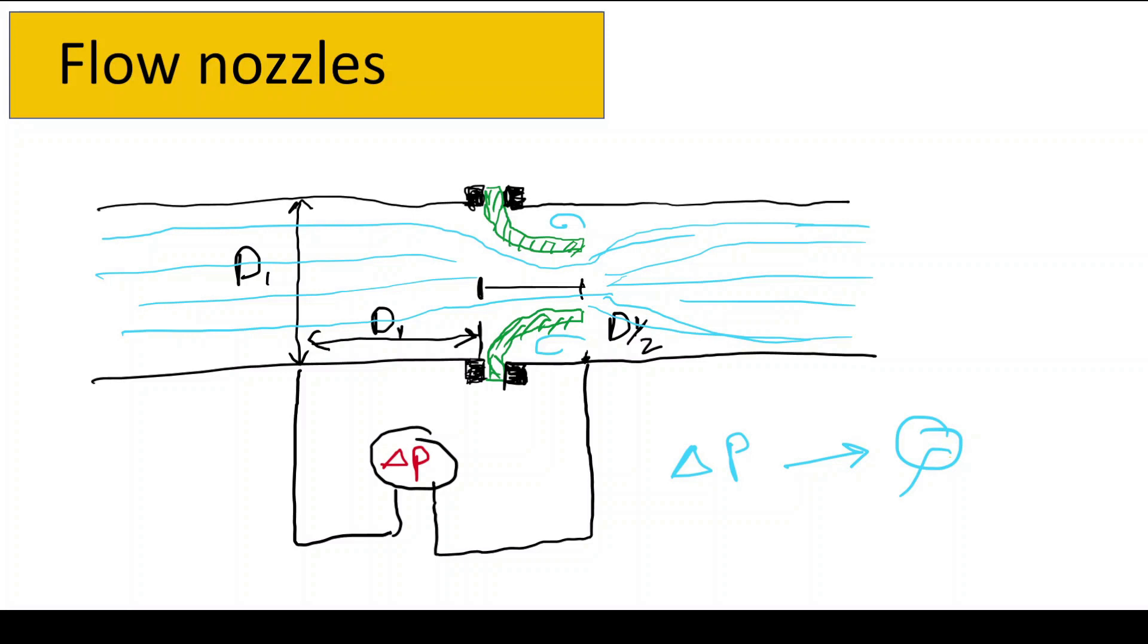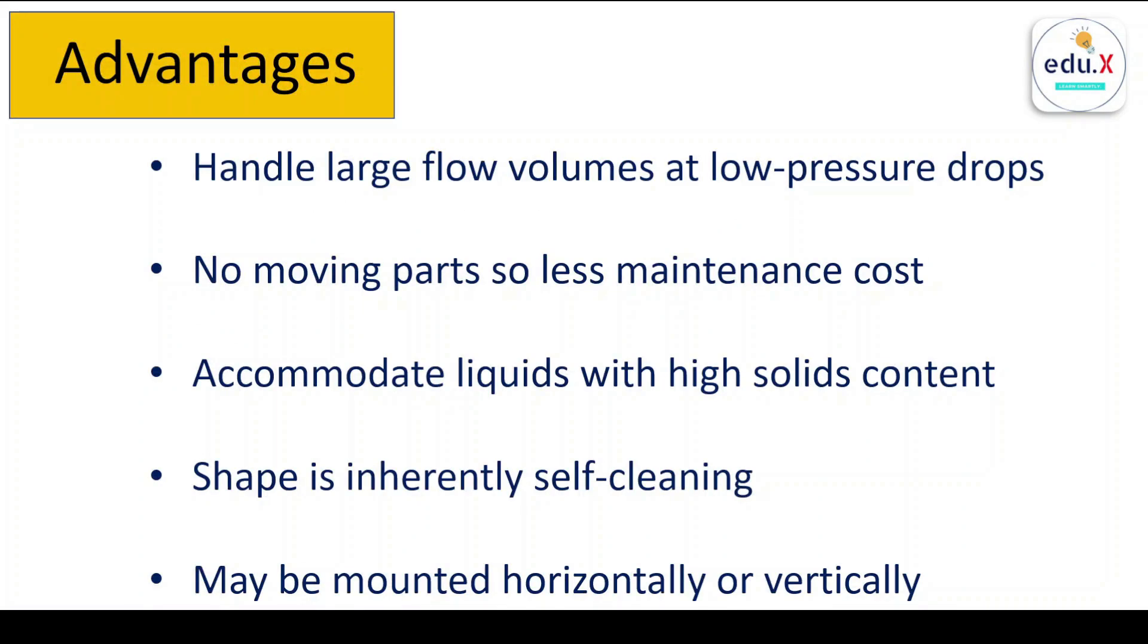So let's now discuss the general advantages and disadvantages of these two flow meter types. First, let's see the advantages. They can handle large flow volumes at low pressure drop. In our previous lesson that was related to orifice plates, compared to the orifice plates here we have minimum pressure drop. These types of flow meters don't have any moving parts so they require less maintenance. They can accommodate liquids with high solid contents that I just described earlier for the case of flow nozzles. And the shape is inherently self-cleaning, so there is converging throat and diverging section that will automatically clean the surfaces of this meter. And it may be mounted horizontally or vertically.